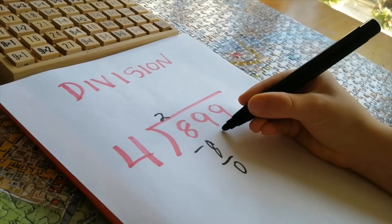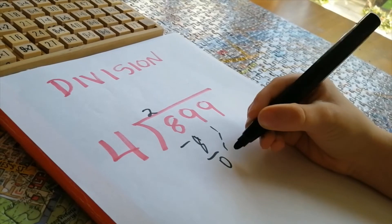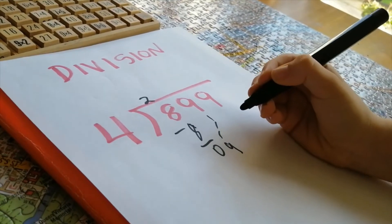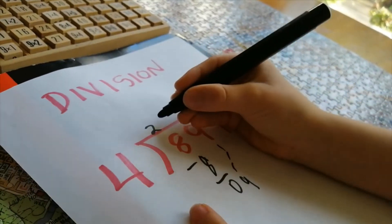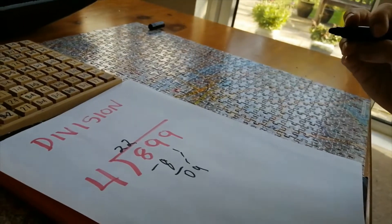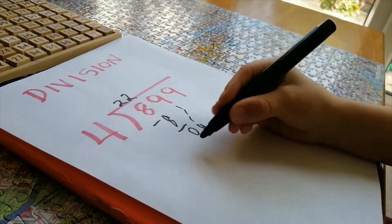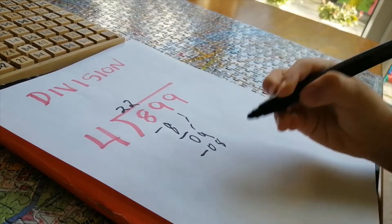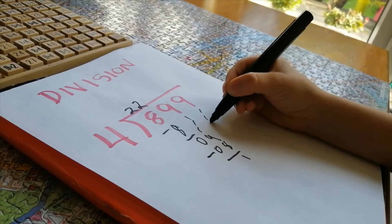Baja la cifra siguiente que es el 9. ¿Cuántas veces está el 4 en el 9? 2. 4 por 2, 8. 9 menos 8, 1. Baja la cifra siguiente que es el 9.